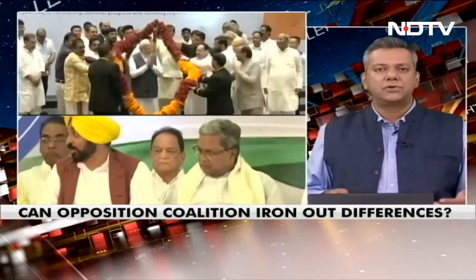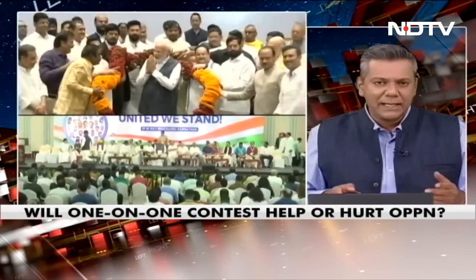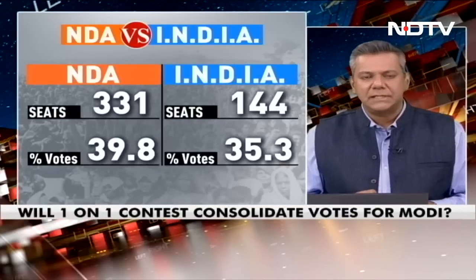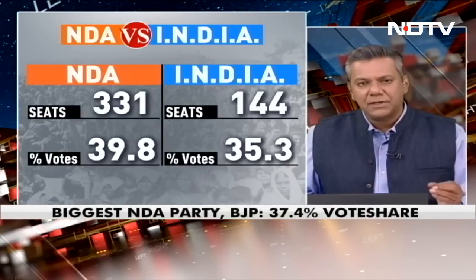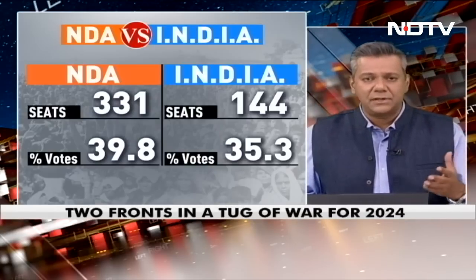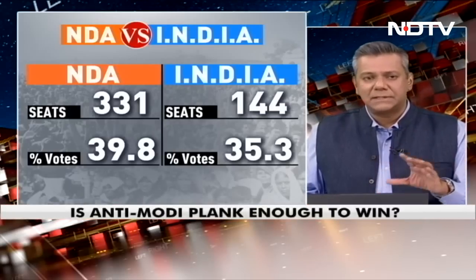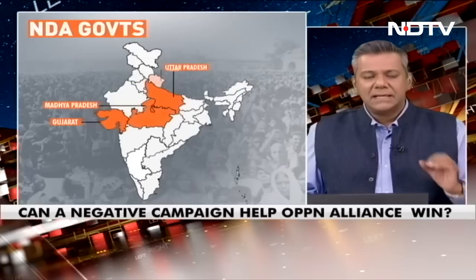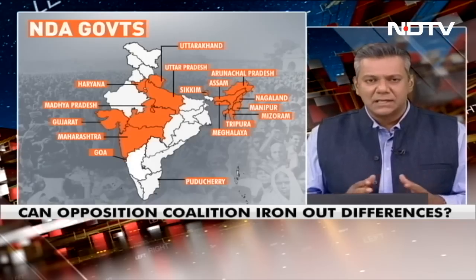What we thought we would do on this show is a deep dive into where each alliance stands at the moment. Let's bring up our first graphic, which gives you the situation as it was in 2019. The NDA won 331 seats, the India Alliance — then called the UPA — 144. The vote share difference wasn't that large: the BJP at 39.8 percent, the India Alliance at 35.3.